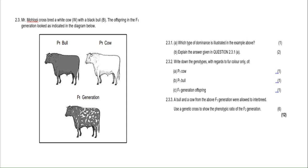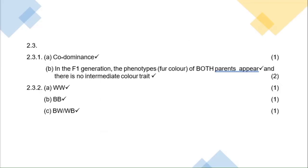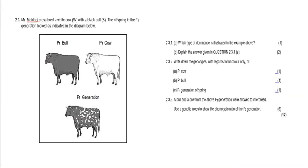Where do you look to identify which type of dominance it is? You look at the F1 offspring. If the F1 was only black, that would be complete dominance. If crossing black and white gave you silver, that would be incomplete dominance. But because the offspring has characteristics of both, the answer is co-dominance. The answer to 2.3.1 is co-dominance.